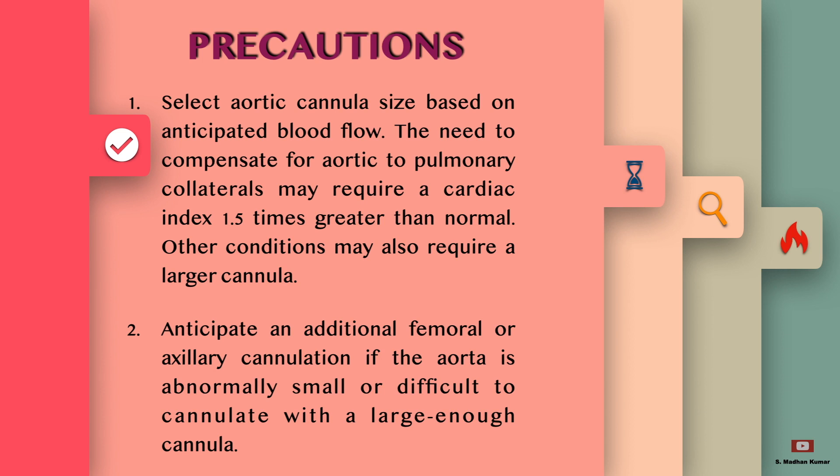Precautions to be taken: select the aortic cannula size based on the anticipated blood flow rate. The need to compensate for aortic to pulmonary collaterals may require a cardiac index 1.5 times greater than the normal required blood flow. Other conditions may also require a larger cannula. Anticipate an additional femoral or axillary cannulation if the aorta is abnormally small or difficult to cannulate.